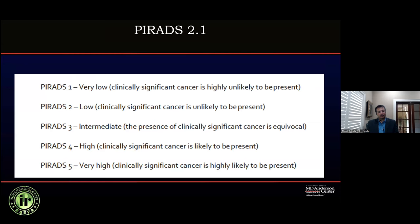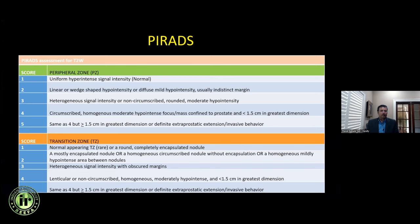PI-RADS is a Likert score ranging from PI-RADS 1 to PI-RADS 5, where 1 is very low suspicion for clinically significant prostate cancer and 5 is very highly likely. We utilize key sequences for both peripheral zone and transition zone to derive a composite risk assessment score. For T2-weighted images, we use different scoring for PZ and TZ. In the peripheral zone, a PI-RADS 4 on T2 is a circumscribed homogeneous moderate hypointense nodular focus less than 1.5 cm. If greater than 1.5 cm with the same features, it is PI-RADS 5.